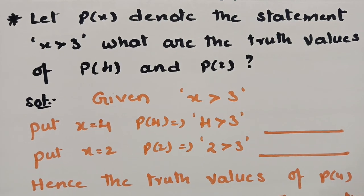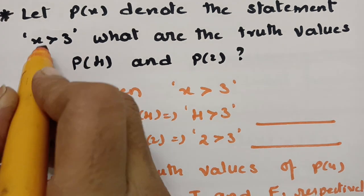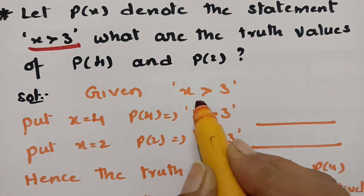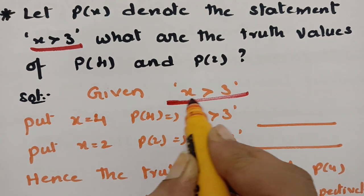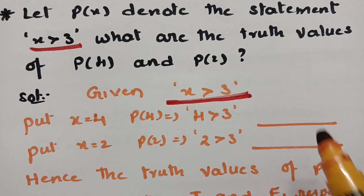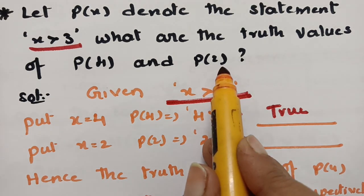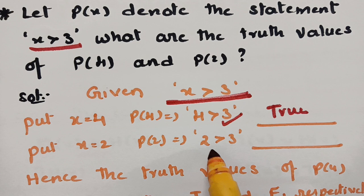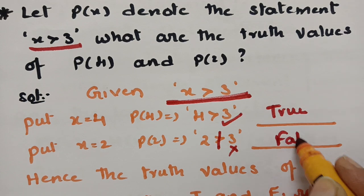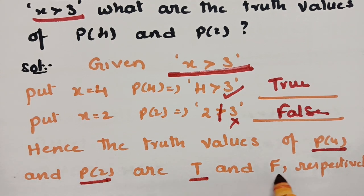If P(x) denotes the statement 'x is greater than 3,' what are the truth values of P(4) and P(2)? For P(4): substituting x = 4, we get '4 > 3,' which is true. For P(2): substituting x = 2, we get '2 > 3,' which is false. Therefore, P(4) is true and P(2) is false.